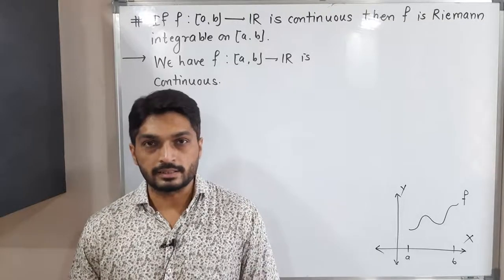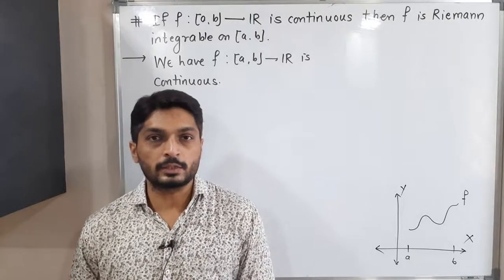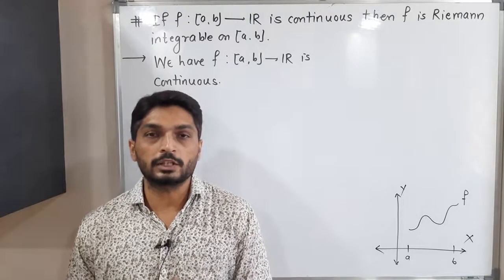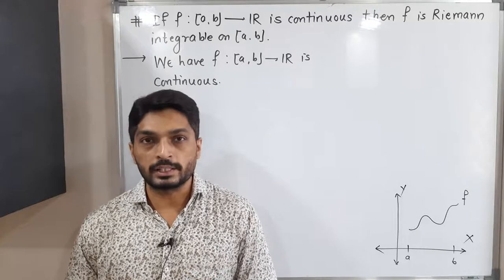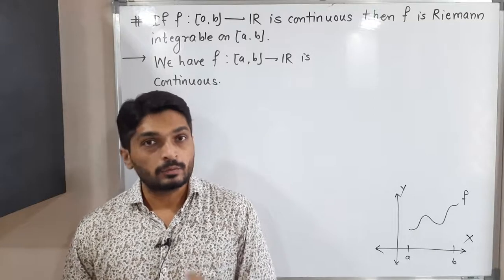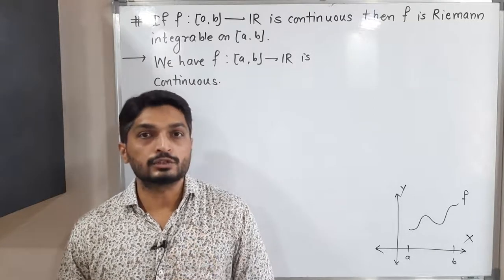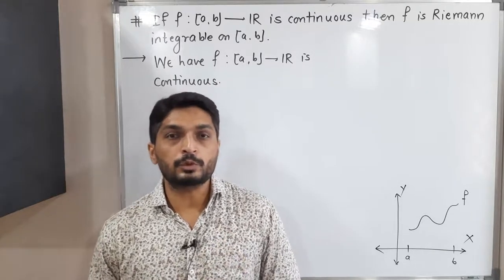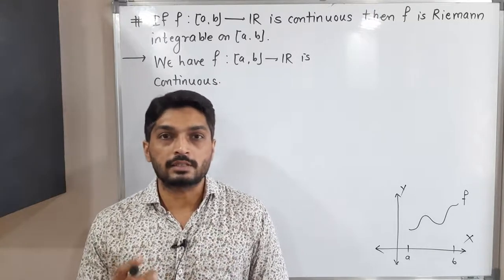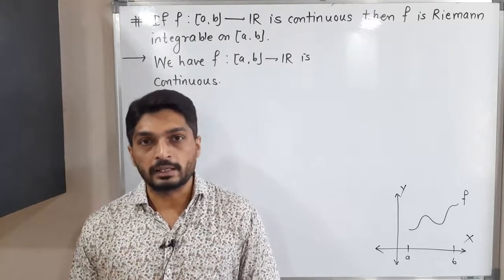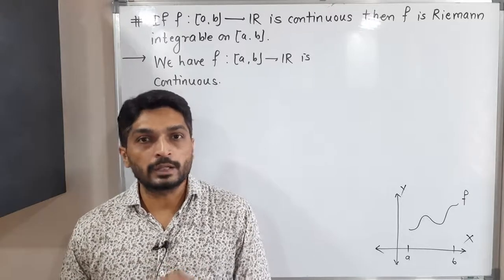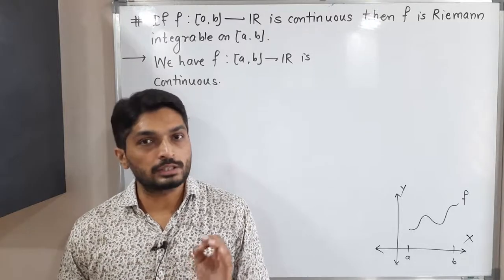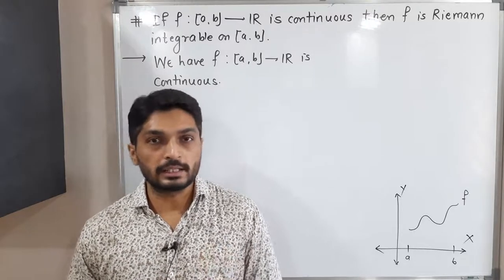Let us discuss this result. We have a function f defined on the closed interval [a, b] which is a continuous function, and we have to prove that the function is Riemann integrable. That means simply we have to prove that every continuous function is Riemann integrable.